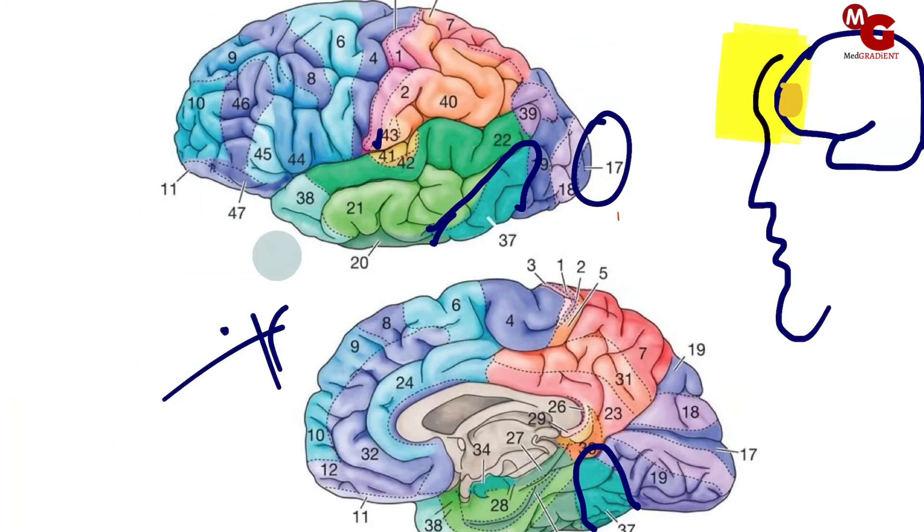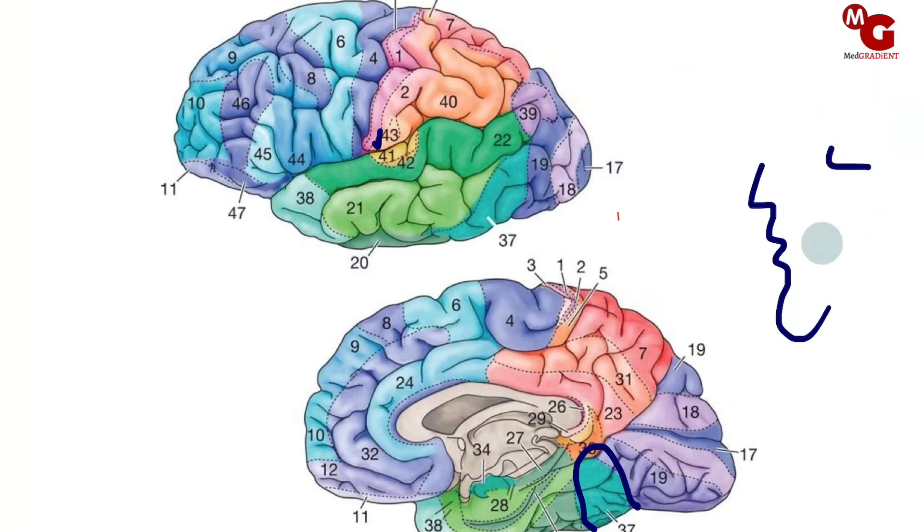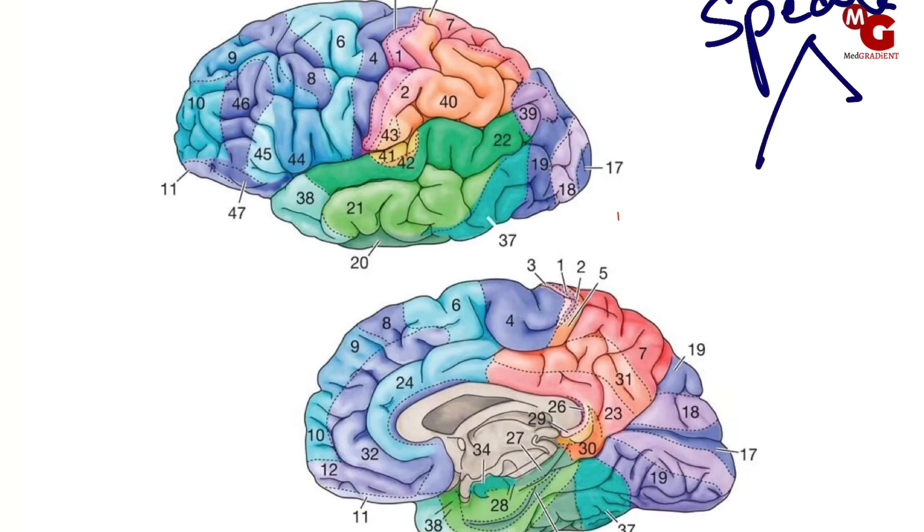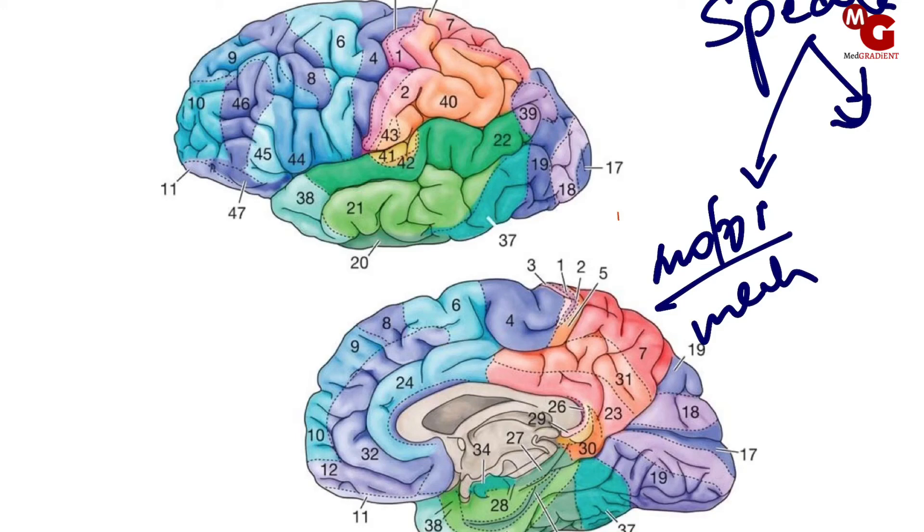After we are done with this, we remain with two important areas: the Wernicke's area and Broca's area. Both of them are related to speech, but they are different. When a person speaks, there are two components of the speech. One is the motor component—the mechanical component of how the twisting of the tongue works, what sounds to make, how loud to speak, how soft to speak. The second part is your sensation. When you're speaking, sometimes you suddenly know what you're speaking or you suddenly start recognizing that you're speaking something. That has to be the sensory part of speech.